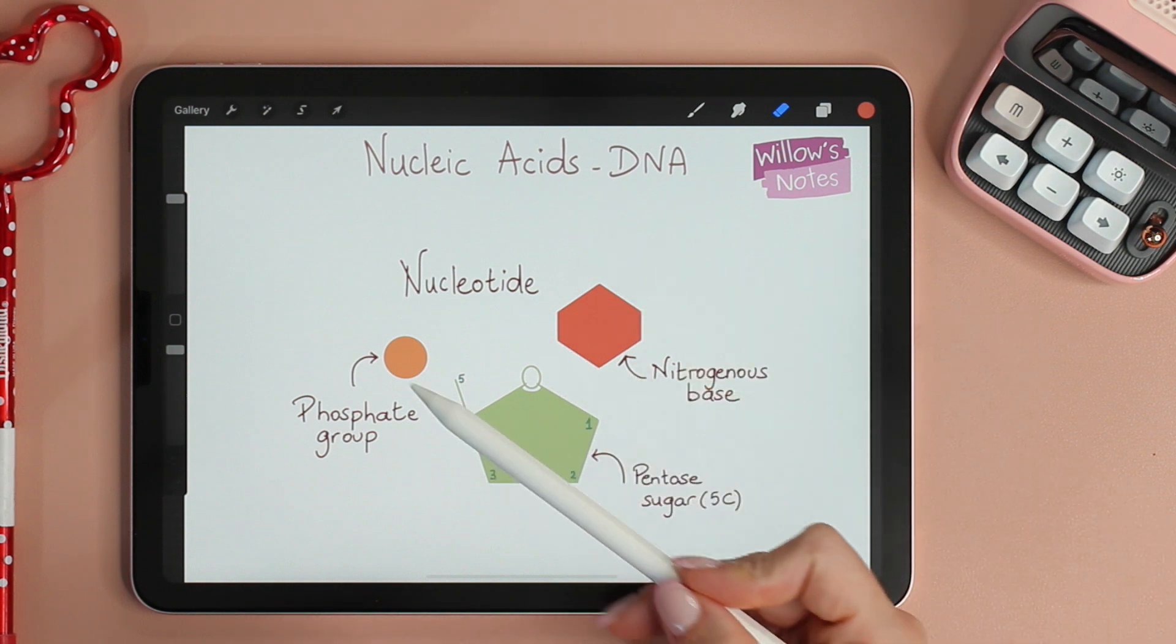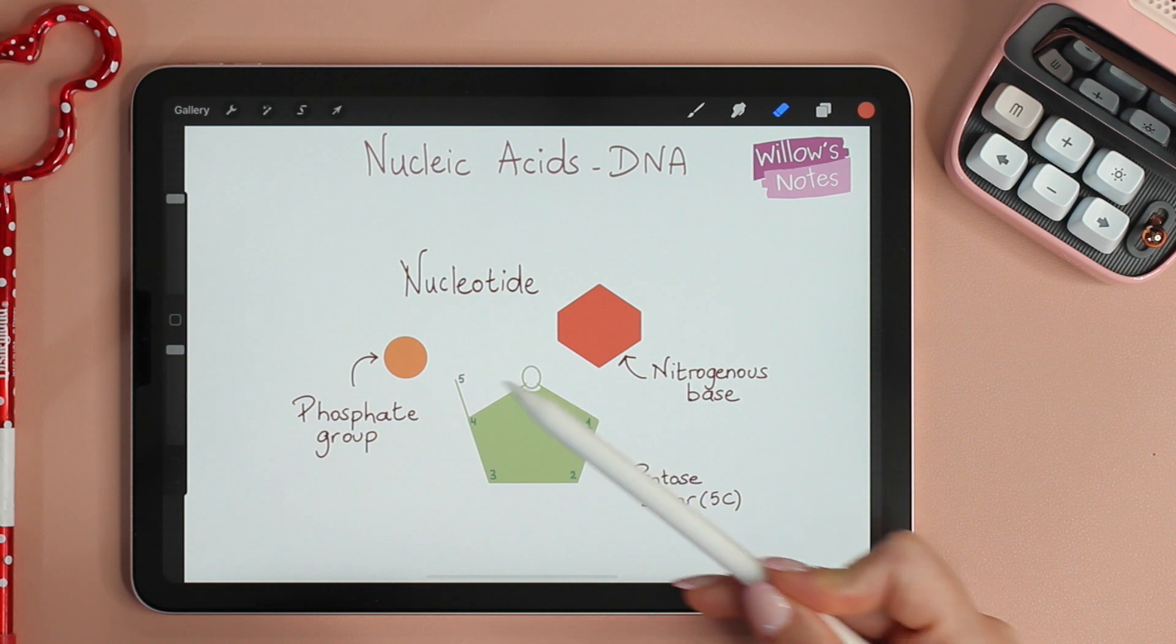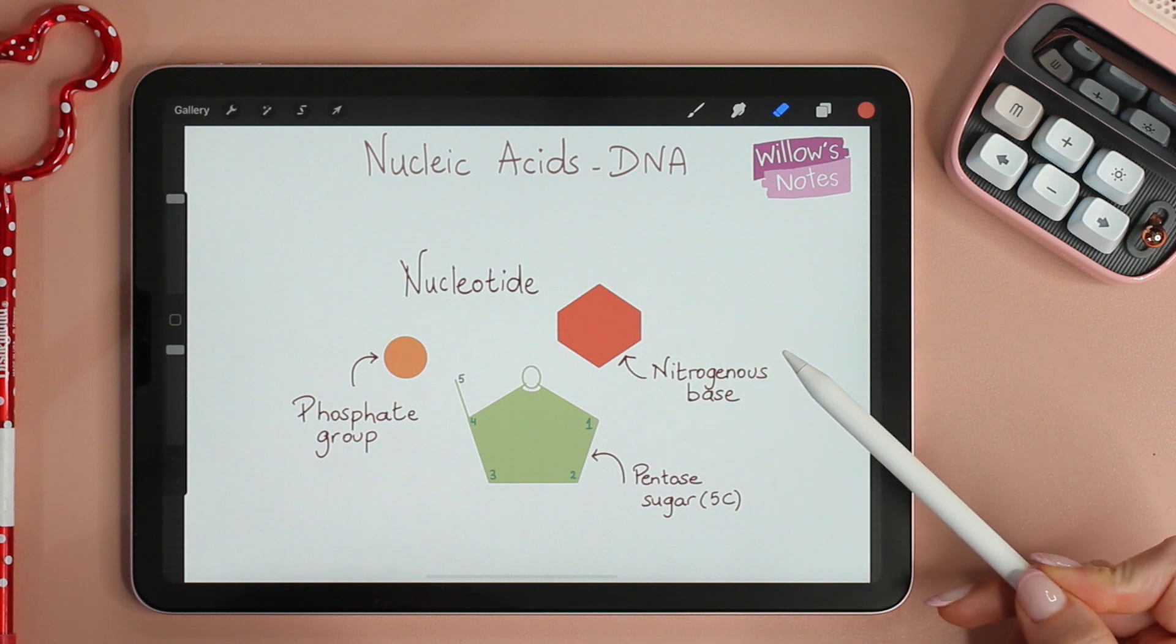Each nucleotide consists of a phosphate group, a pentose sugar, pentose meaning a 5-carbon sugar, and a nitrogenous base.